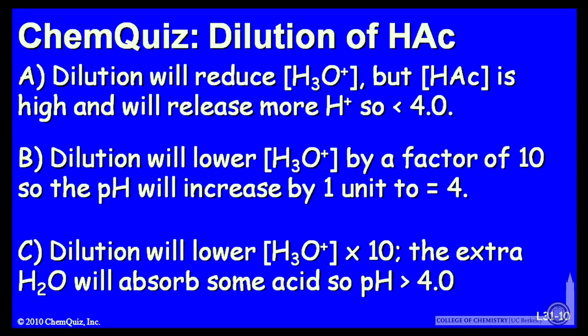Let's look at a possible explanation for each answer. A: dilution will reduce the H3O+ concentration, but the HAC concentration is high and will release more H+, so we'll have a pH less than 4.